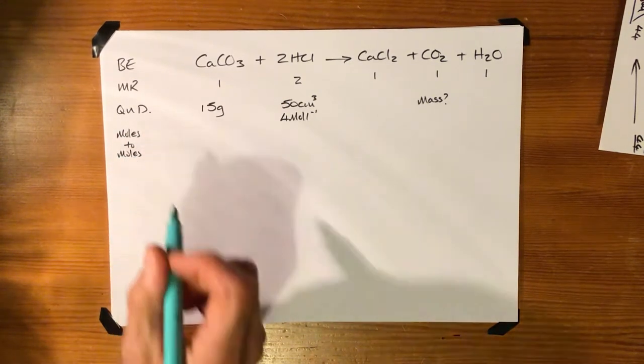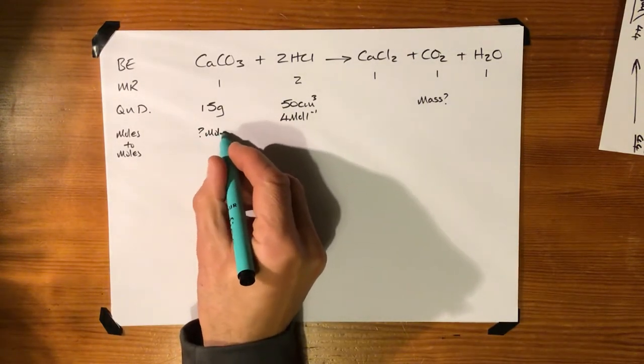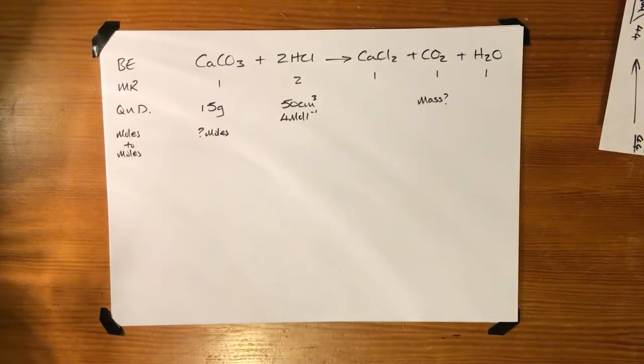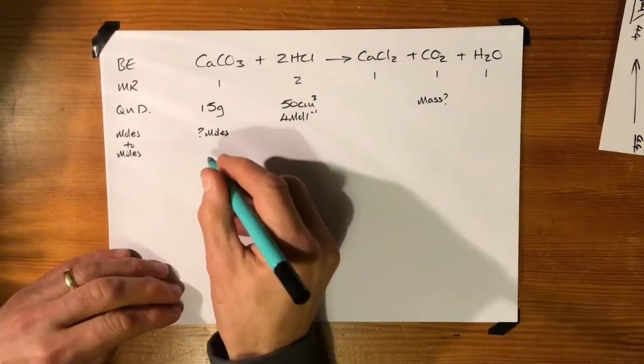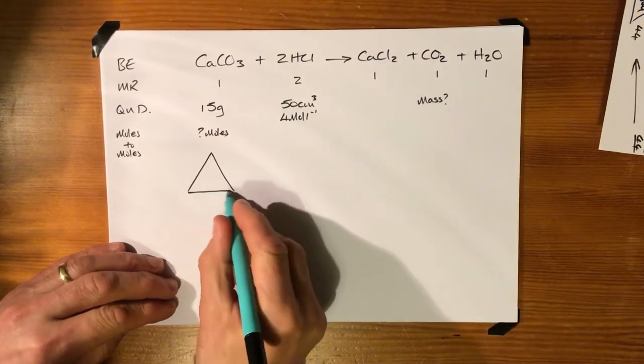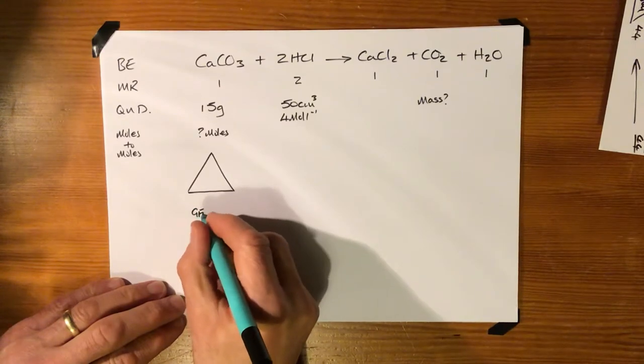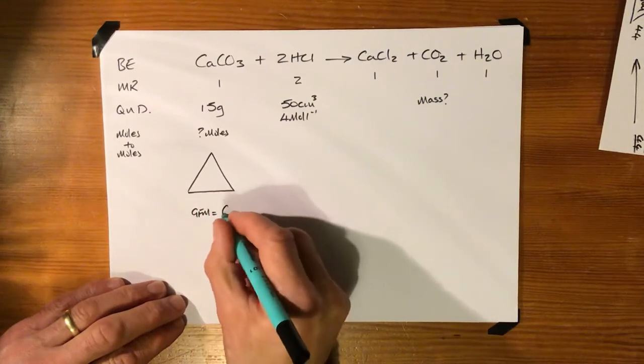Right, let's go moles to moles here. Let's work out what kind of moles we've got. So 15 grams of calcium carbonate, we need our triangle. We also need to work out the gram formula mass of calcium carbonate.